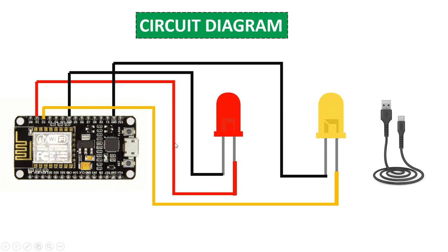You can see a USB cable — using this cable you'll connect and upload the code from your laptop. The red LED's positive pin is connected to the NodeMCU D1 pin. The NodeMCU has two ground pins, and we connect the red LED's ground to one of them. For the yellow LED, the positive is connected to the NodeMCU D2 pin and the negative to the ground pin. Then connect your NodeMCU to your laptop via USB.